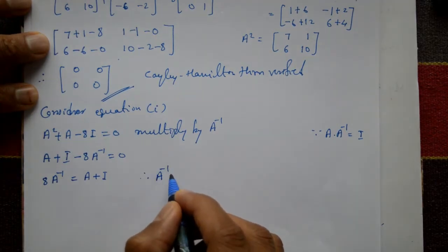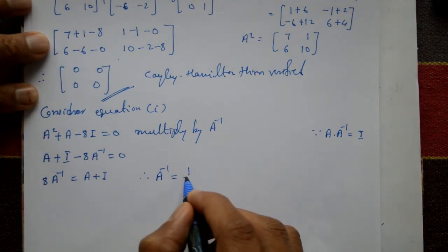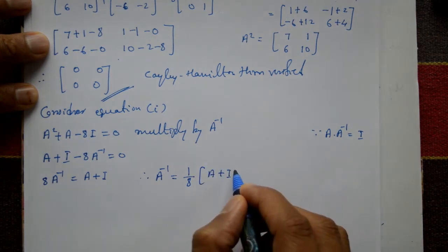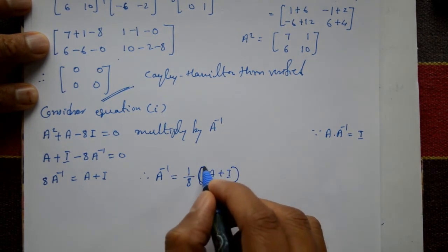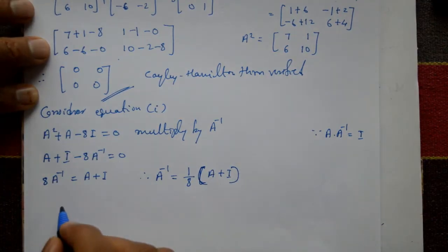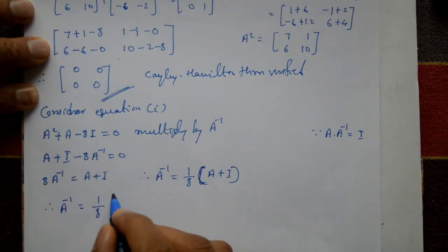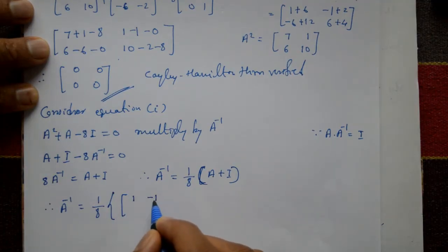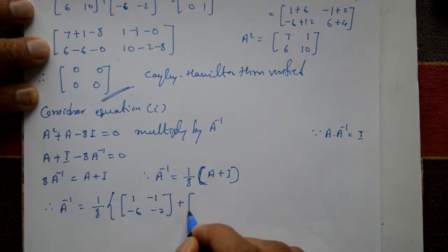Therefore, A⁻¹ = (1/8)(A + I). Substituting: A = [[1,-1],[-6,-2]] and I = [[1,0],[0,1]], so A + I = [[2,-1],[-6,-1]], and the inverse of A is (1/8)·[[2,-1],[-6,-1]].